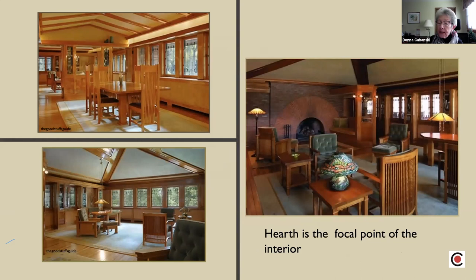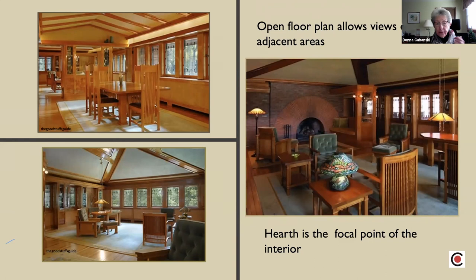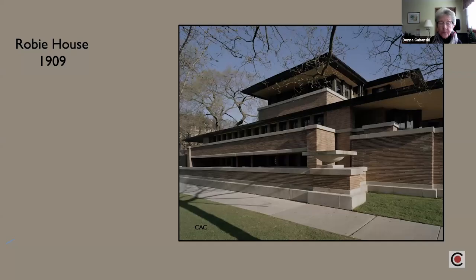When we go inside, you see that the fireplace — a very large hearth — is the focal point of the interior. Looking at the other pictures, you can see the open plan where you're seeing from one room to the next. The Hurtley House is a private home, so you would not be able to visit it unless it were on one of the house walks. It's one of the early prairie houses.